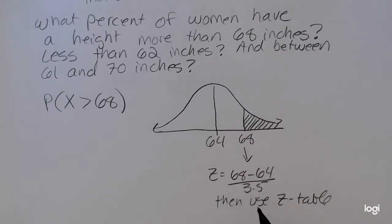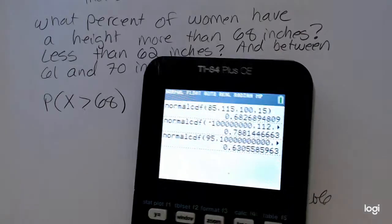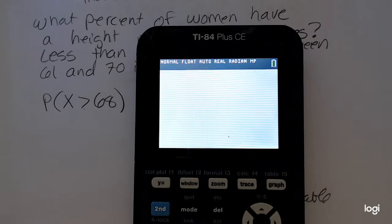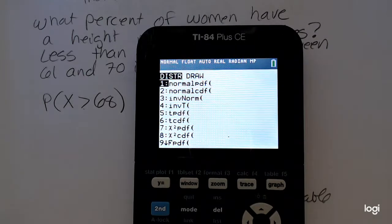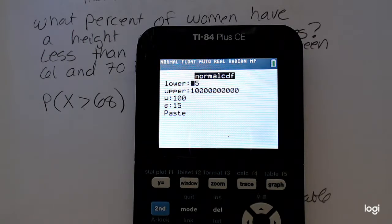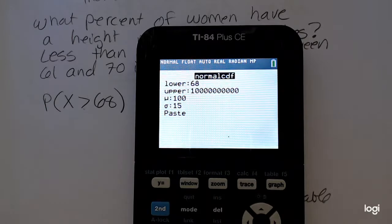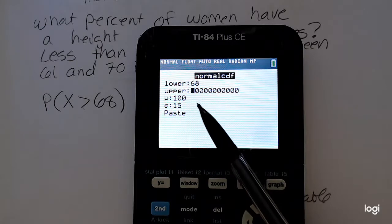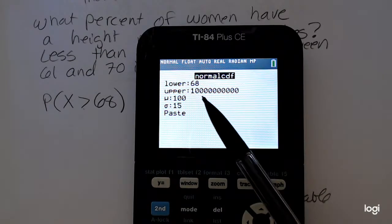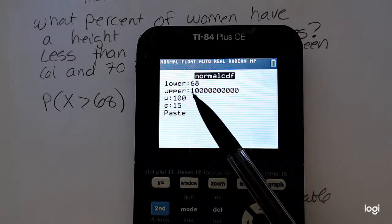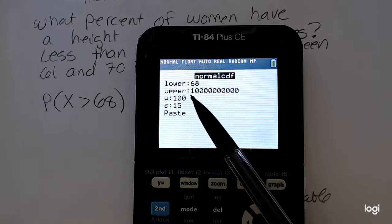I'm going to go ahead and use the normal CDF function in the calculator. Going to my distribution menu, selecting normal CDF. My lower bound is 68. My upper bound is theoretically positive infinity, although that would not make sense when we're talking about height. But for this purpose, all you need to do is put in a positive 1 and a bunch of 0s.